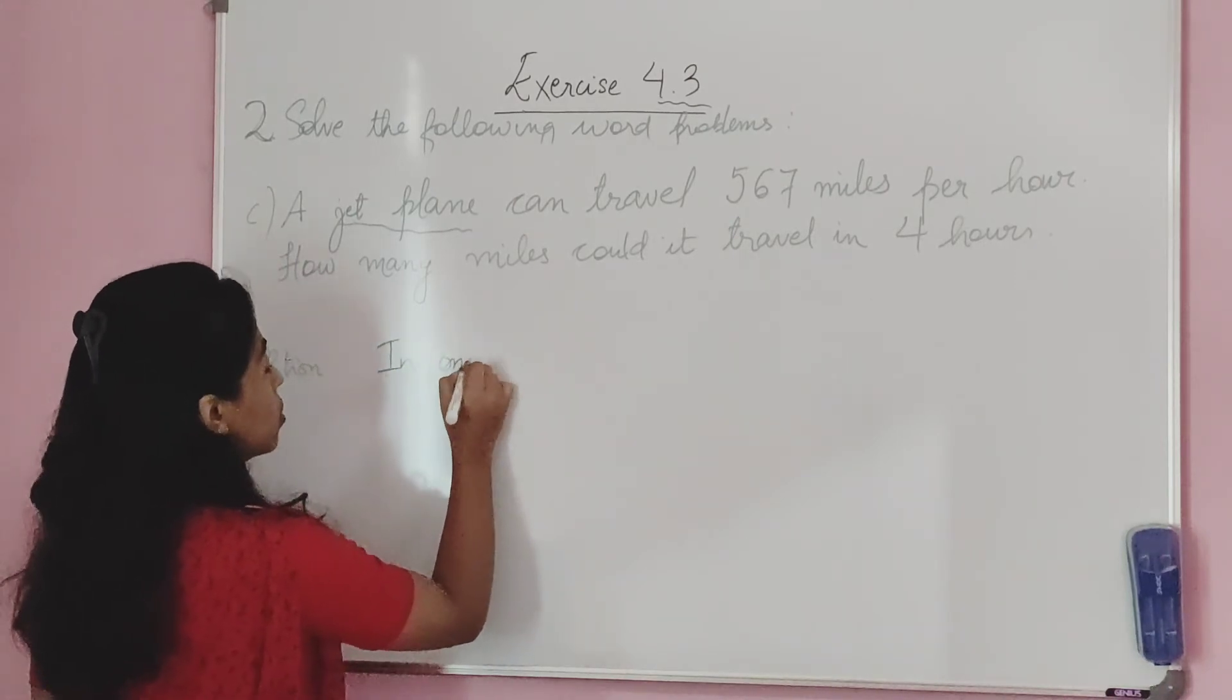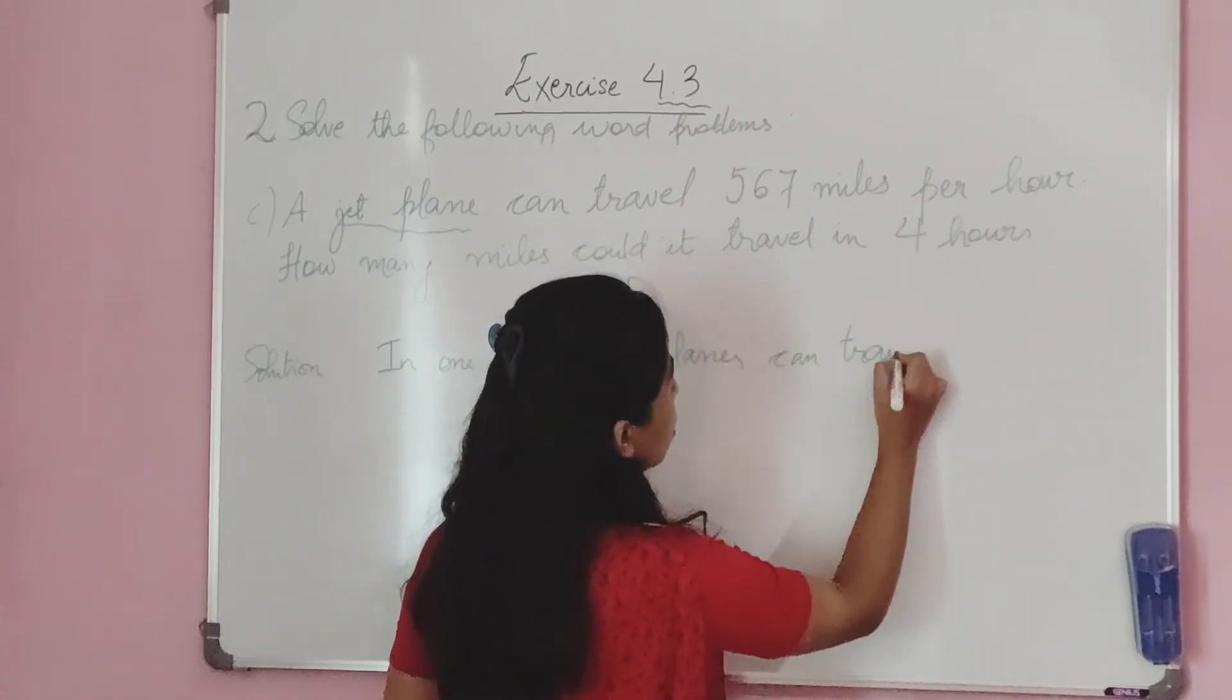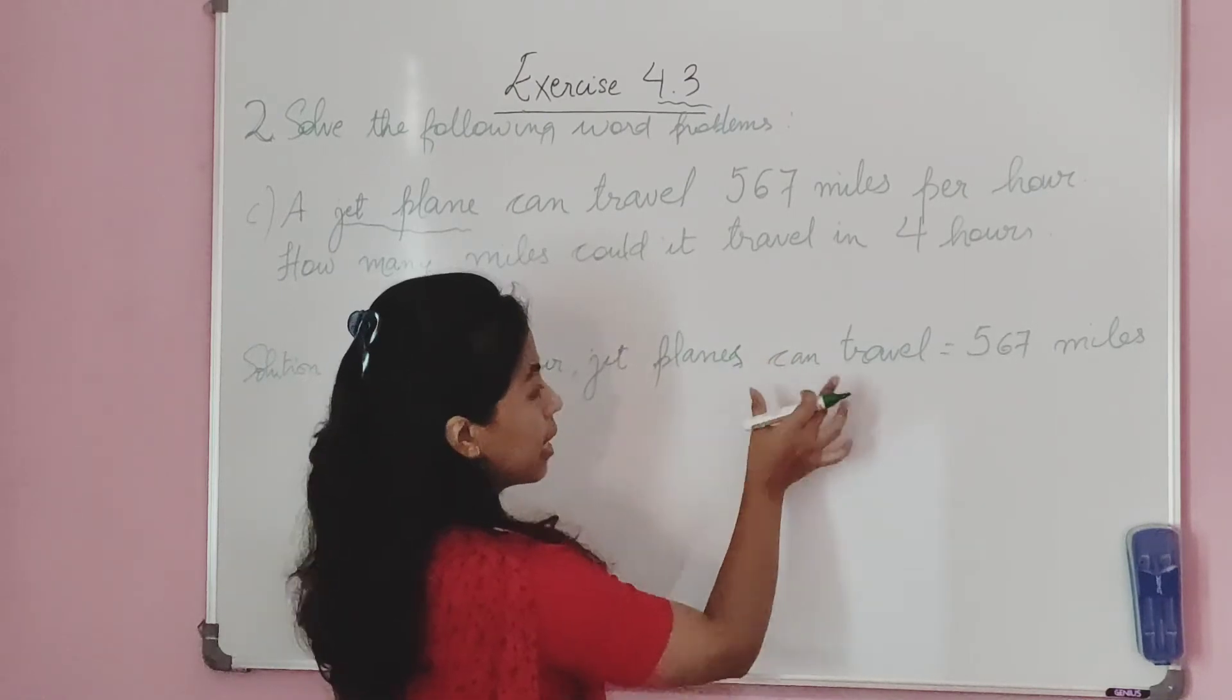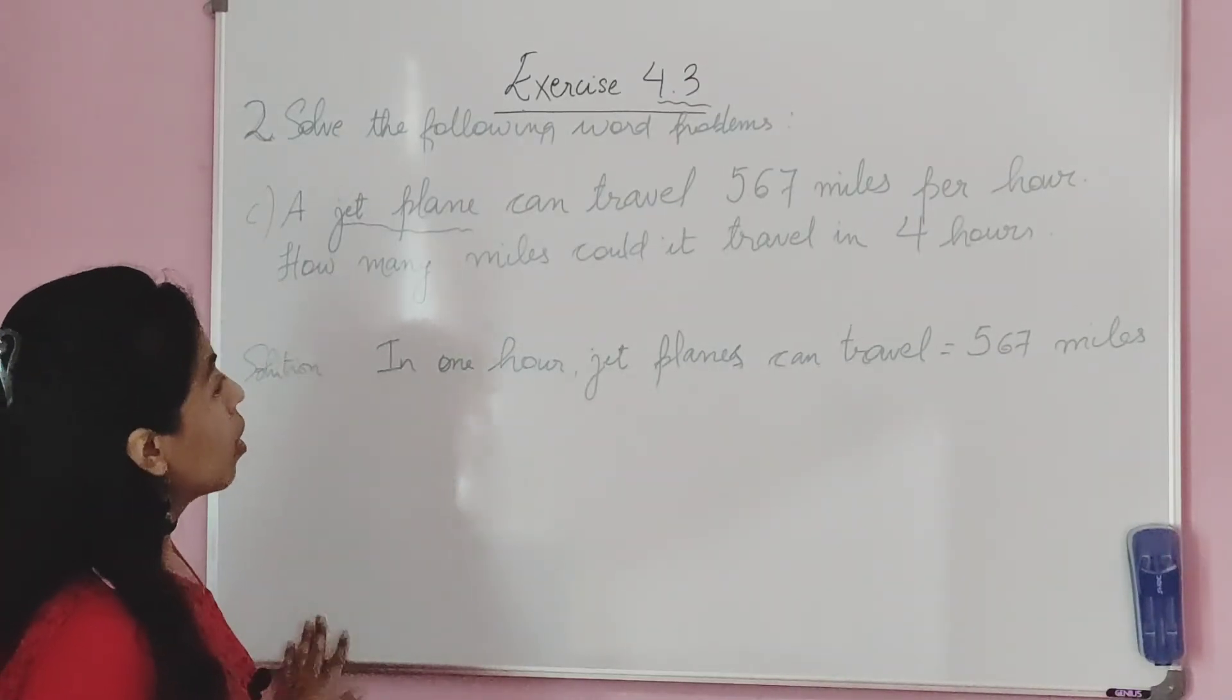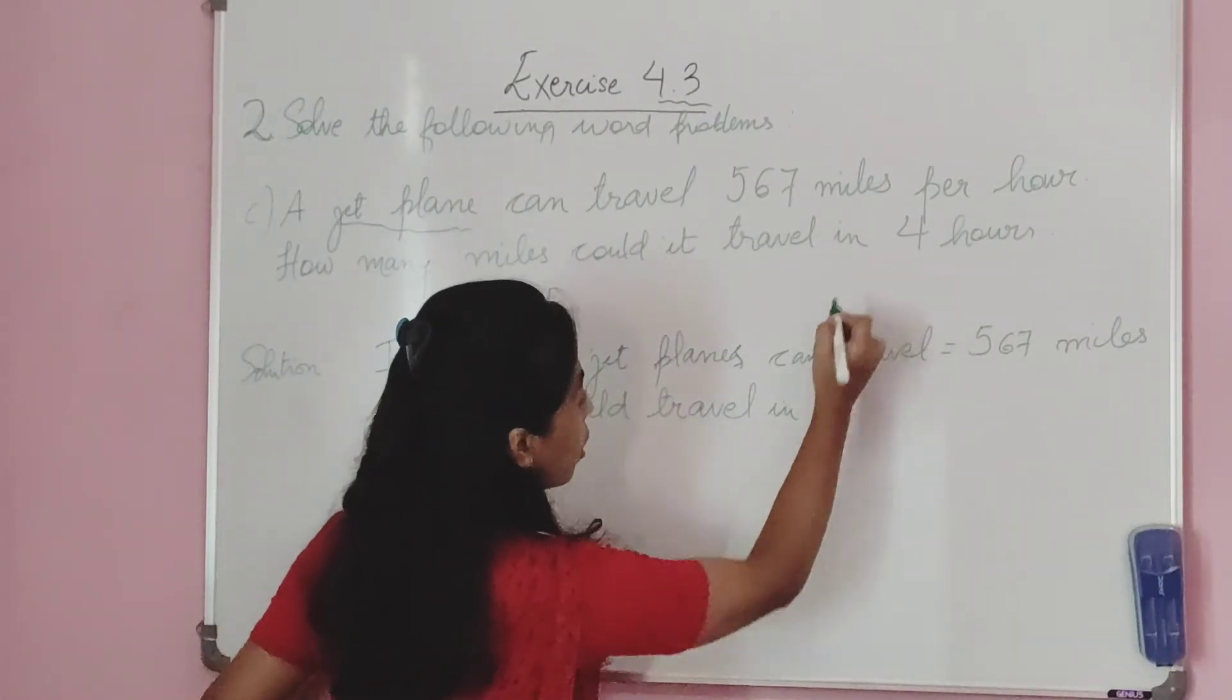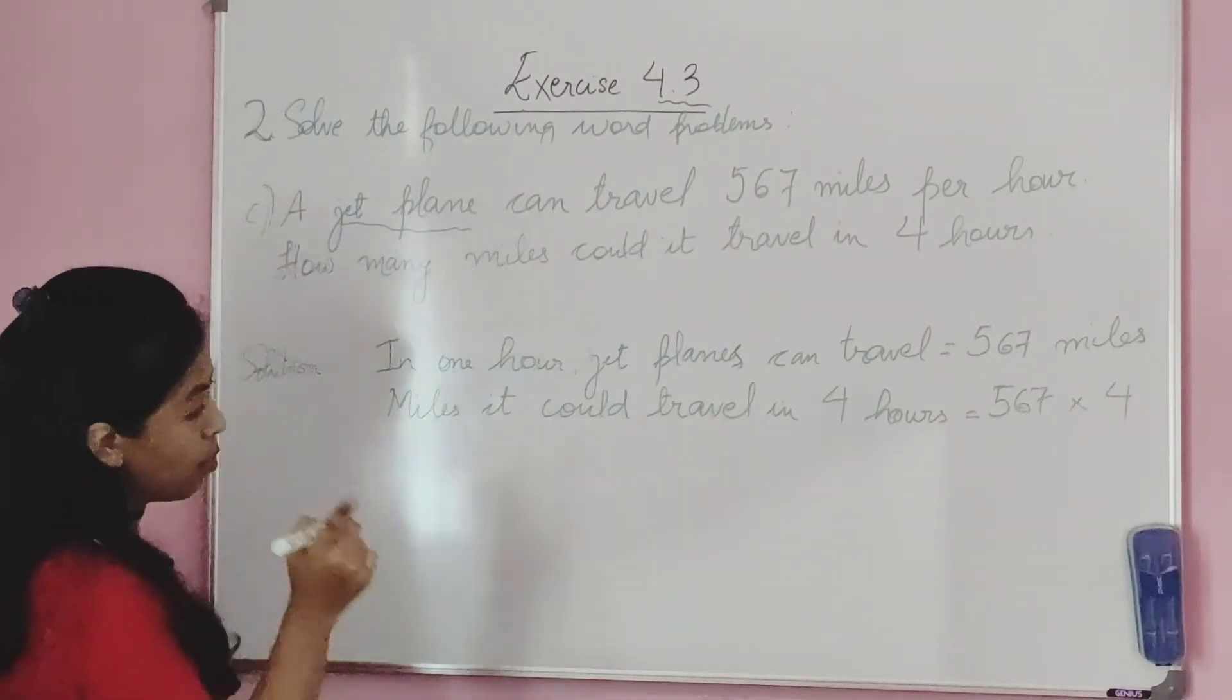In one hour, jet planes can travel 567 miles. The question is: how many miles could it travel in four hours? We need to multiply 567 by 4.